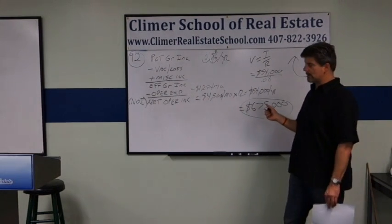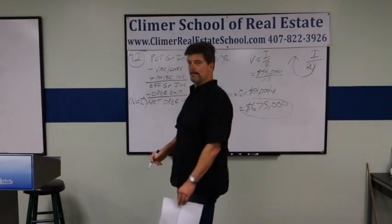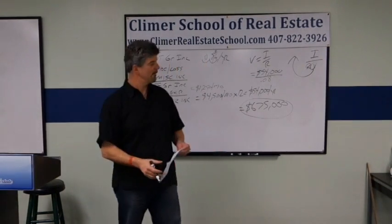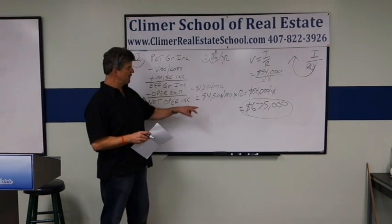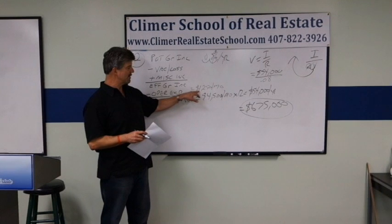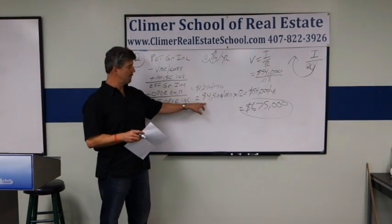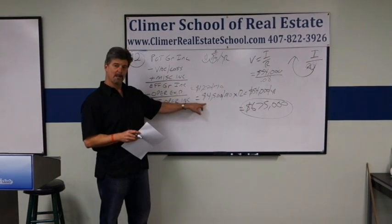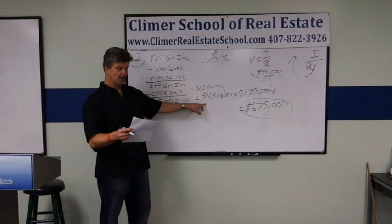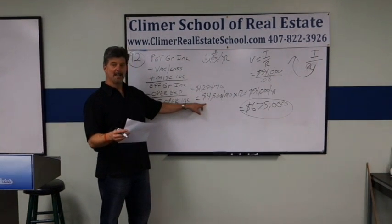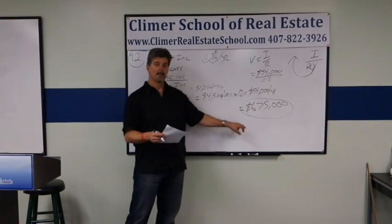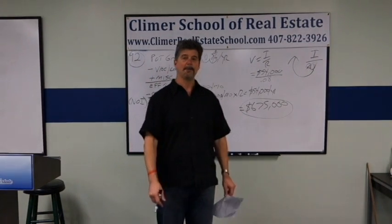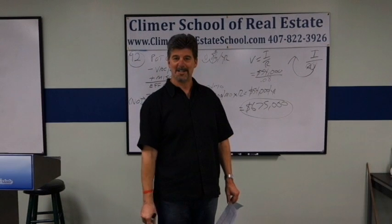That's your answer on this practice exam: A, $675,000. However, if you make the mistake of subtracting $1,250 from $4,500 and then multiplying by 12, you'll get answer D, $487,500 — and that's the wrong answer. The right answer is A, $675,000. Good luck on the state exam.